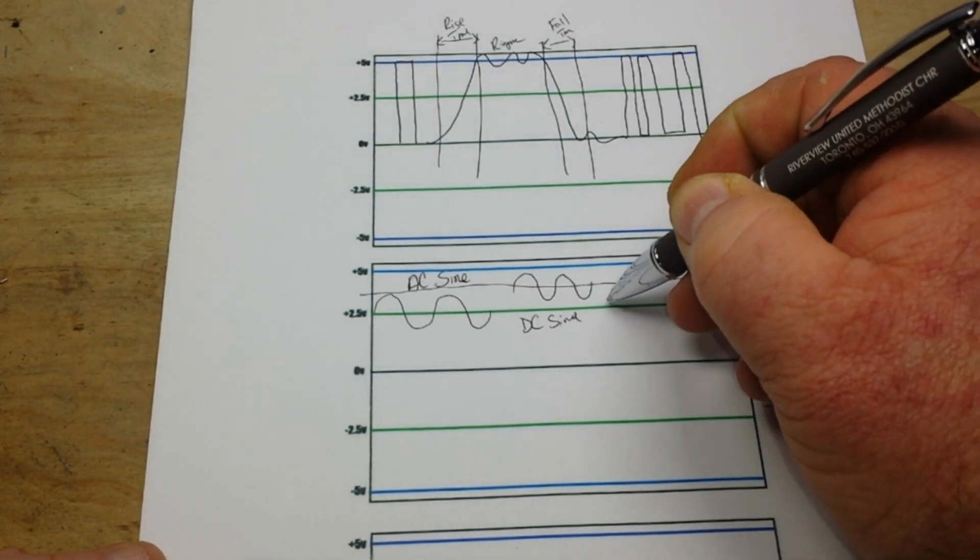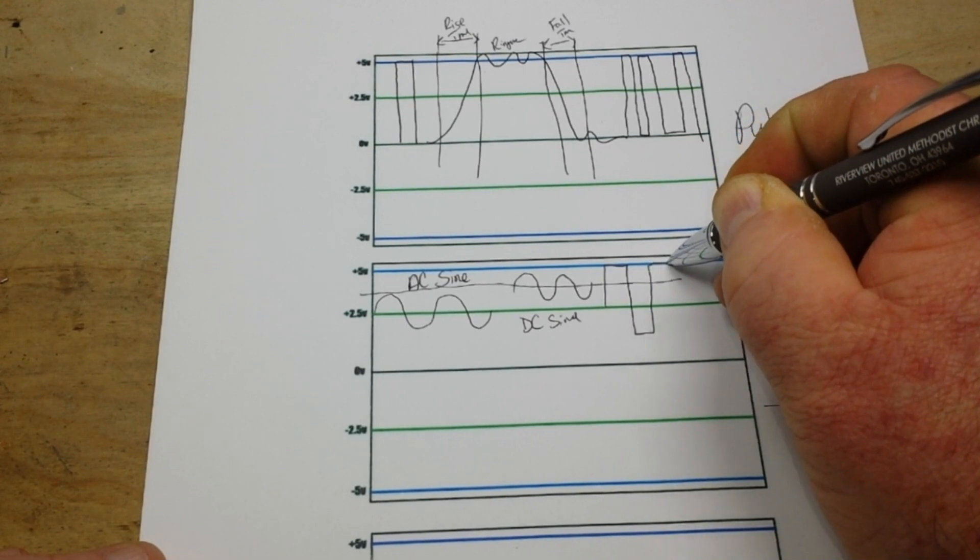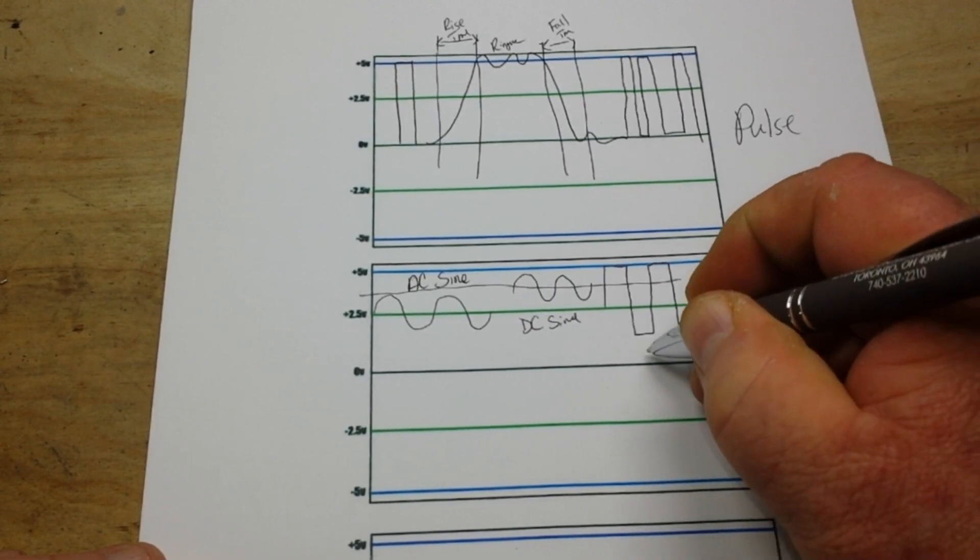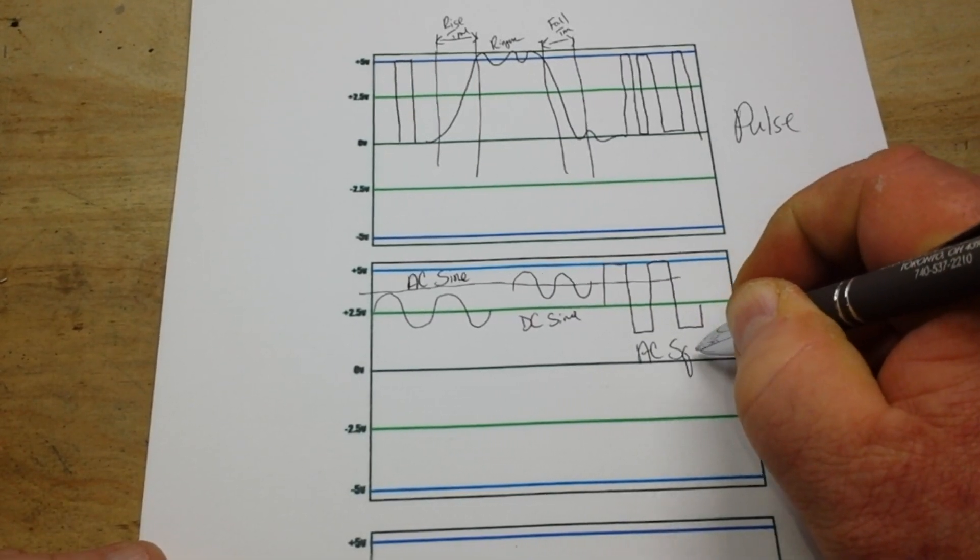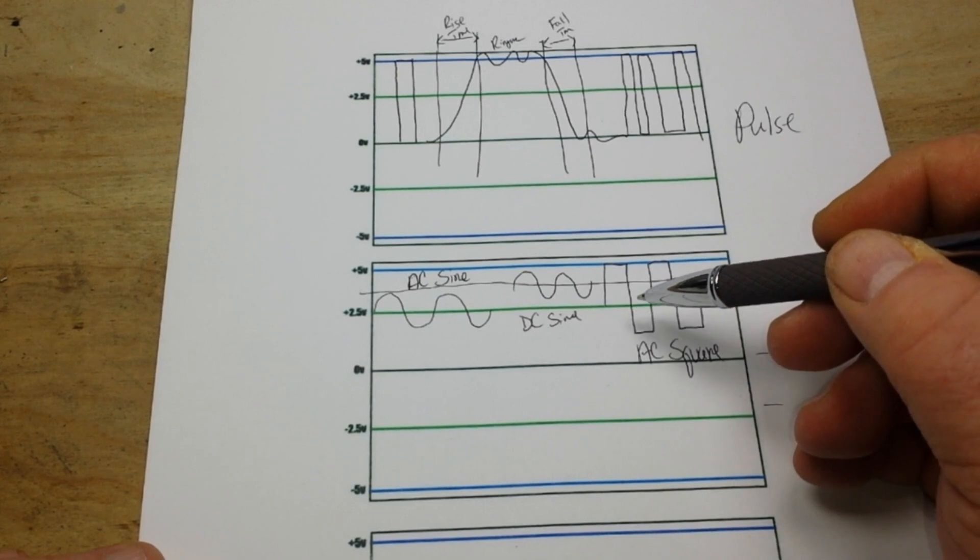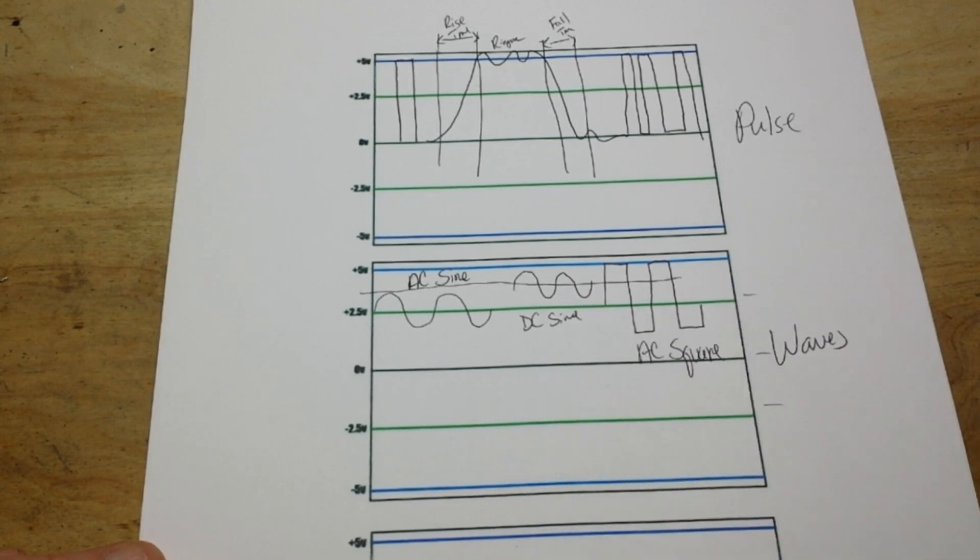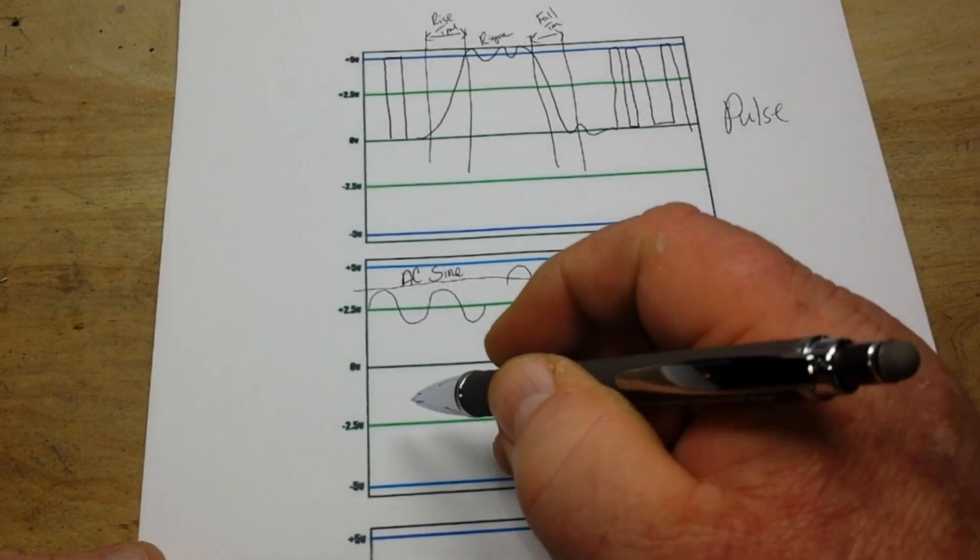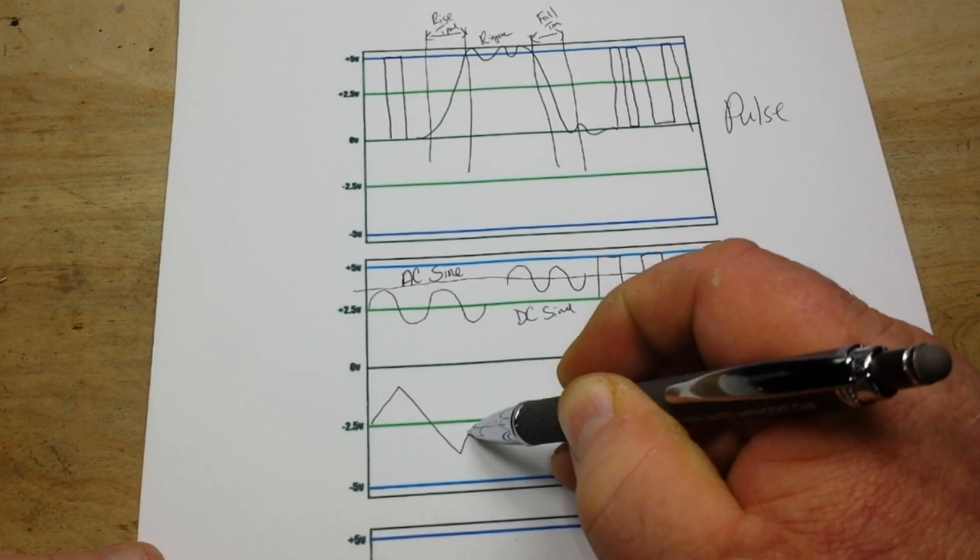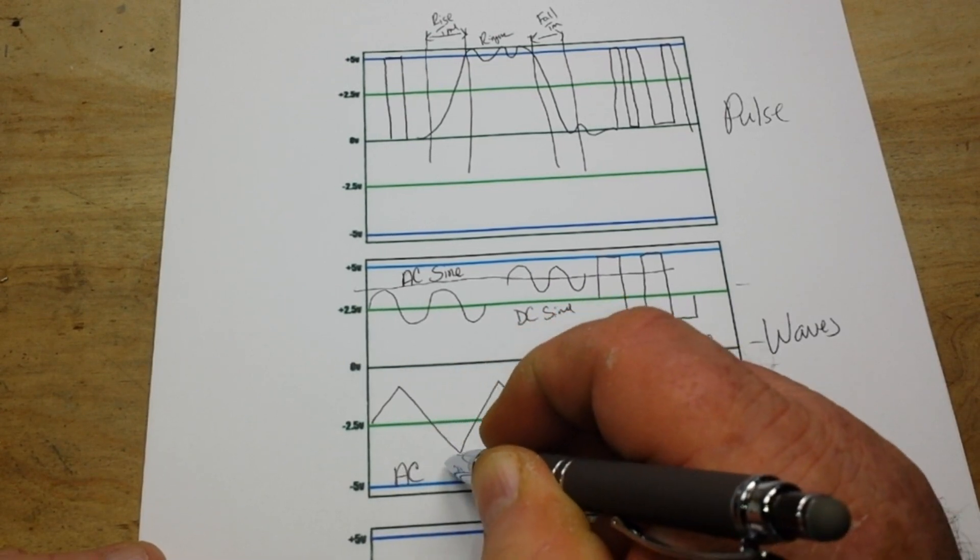Okay, now we can also have an AC square wave. So I can remember how to spell square. Now this will be more properly called an AC power wave pulse train, but for our purposes we'll call it an AC square wave. Next we will go with that one, that would be of course an AC triangle wave.